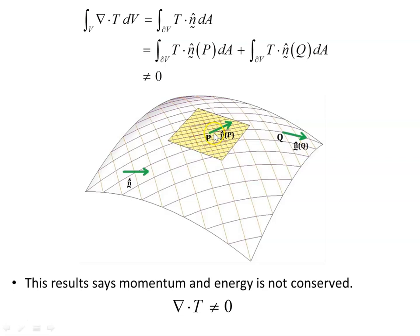Each point on a curved manifold has its own vector space. At point P, you have a set of basis vectors that form a vector space. For a two-dimensional manifold such as this curved surface, that space will be a flat plane. Point P has its own vector space, point Q has its own vector space. So we won't be adding or subtracting vectors — they have different basis vectors. This result says momentum and energy is not conserved. There's no global conservation of energy in general relativity, because on curved manifolds you have this problem: vectors at different points cannot be added or subtracted.